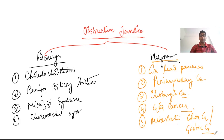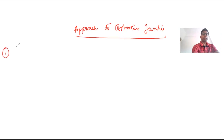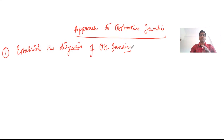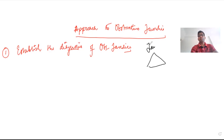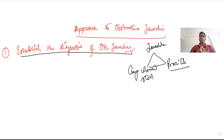Now let us see how we approach a patient with obstructive jaundice. The first step is to establish the diagnosis of obstructive jaundice. The patient should have the classical triad of jaundice with clay-colored stool and pruritus. Clay-colored stool results from the absence of stercobilin in the stool, and pruritus is due to deposition of bile pigments in the dermis. We must also differentiate obstructive jaundice from hemolytic jaundice and hepatocellular jaundice.